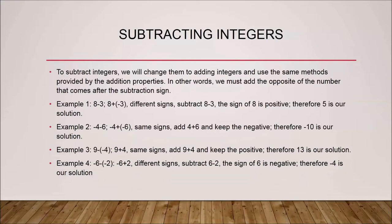Example three: nine minus minus four. The opposite of negative four is positive four, so the operation becomes nine plus four, a regular addition. Both numbers have the same signs — both positive — so nine plus four equals thirteen.